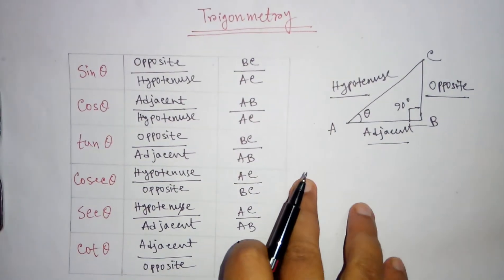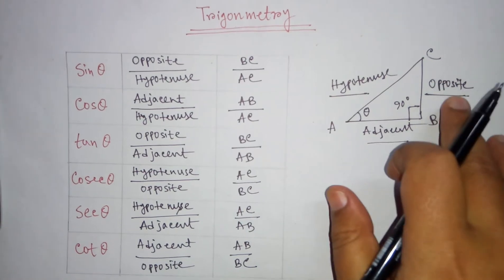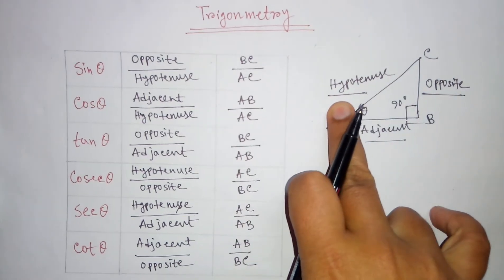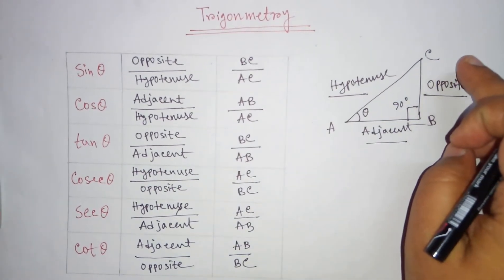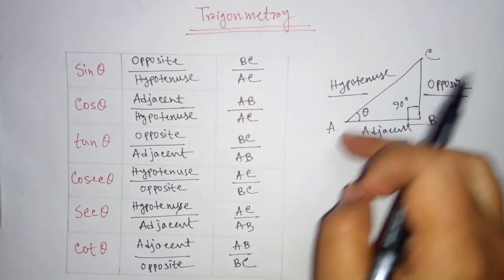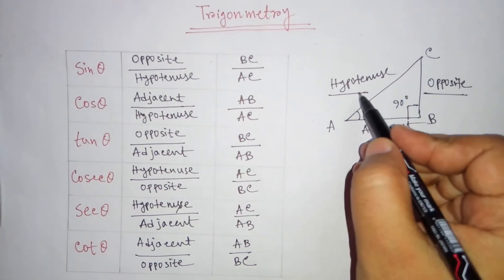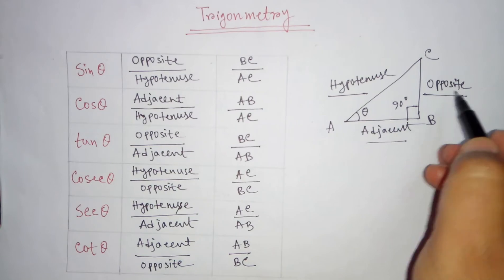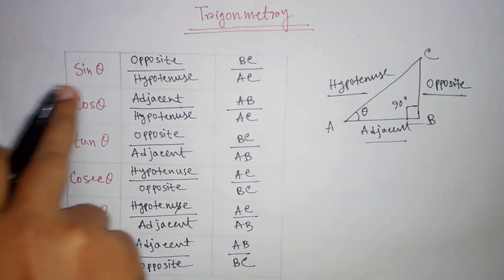What is the value of sin theta? It's the opposite divided by hypotenuse, that means BC divided by AC. If you know the values of hypotenuse and opposite, you can easily find the value of sin theta.